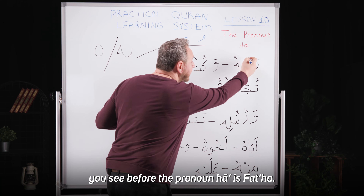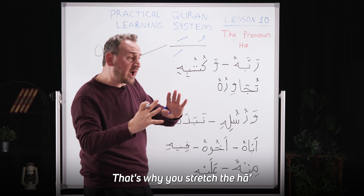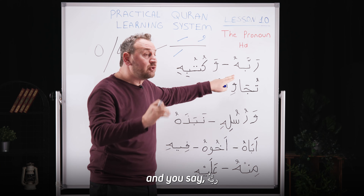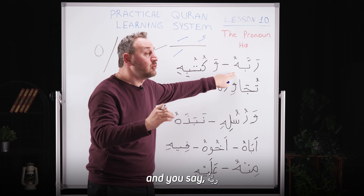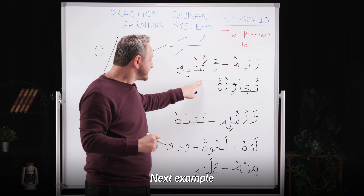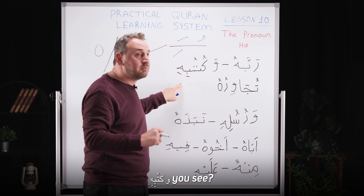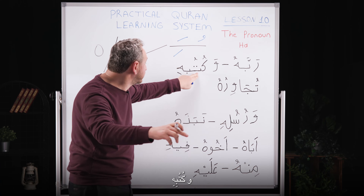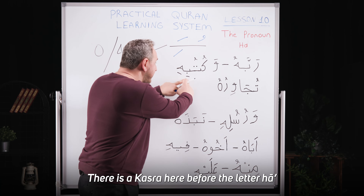Let's make an example to understand this better. Rabbehu. You see, before the pronoun Ha there is a fatha. That's why you stretch the Ha, and you say: Rabbehu.